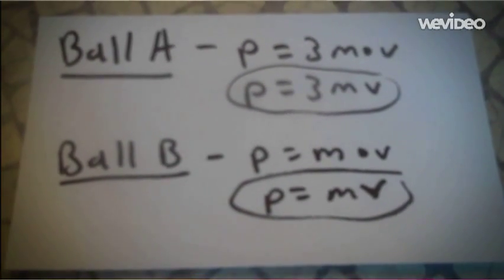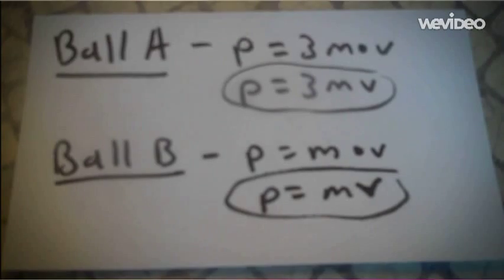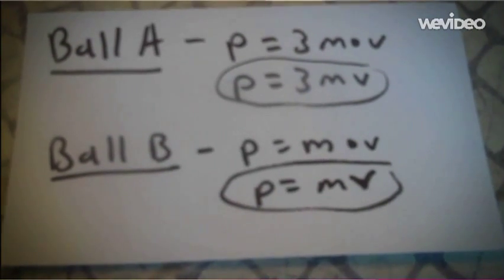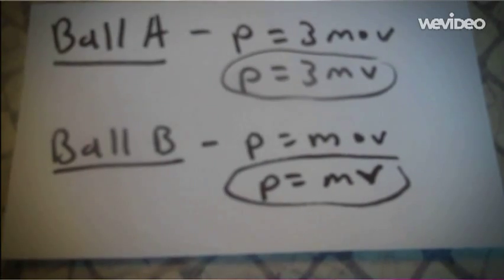Ball A is p equals 3m times v, which is 3mv. And ball B is p equals m times v. 3mv is three times more than mv. I hope this helped you understand momentum.